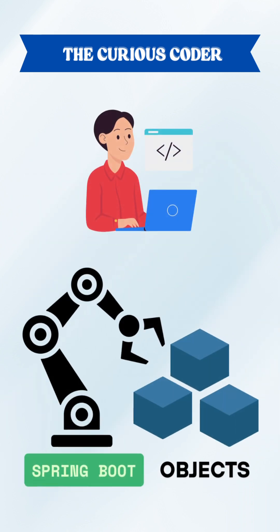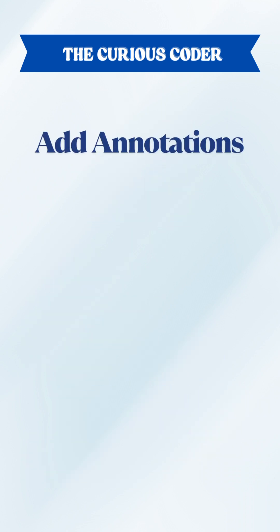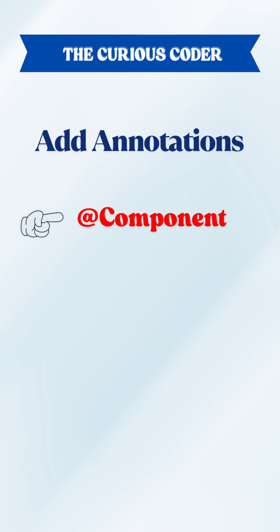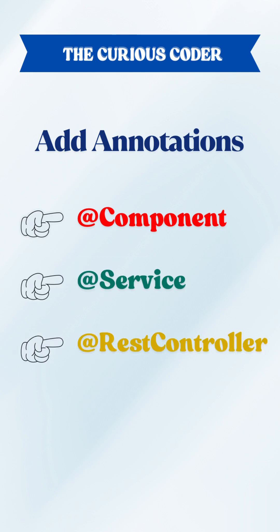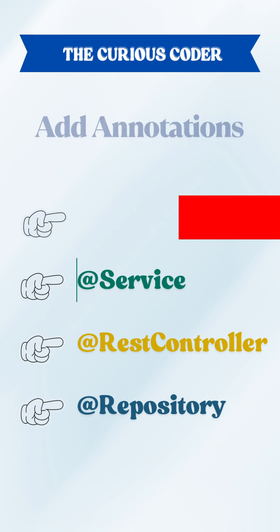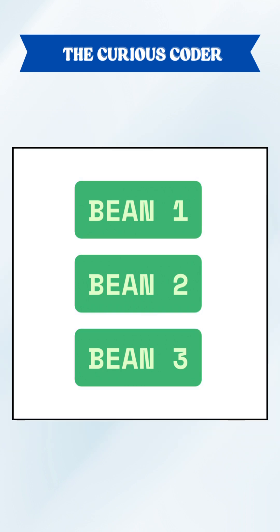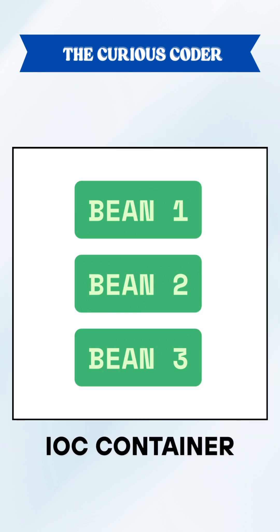Instead of you manually creating objects, Spring does it for you. Just add an annotation like @Component, @Service, @RestController, or @Repository on a class, and your object for that class gets created. These objects are called beans, and Spring manages them all inside something called the IOC container.